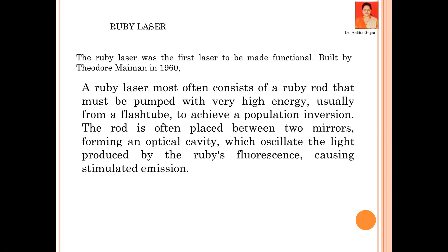Ruby laser को Theodore Maiman ने 1960 में सबसे पहले invent किया था। इसमें उन्होंने एक ruby rod ली थी, जिसके ऊपर एक flash tube या flash lamp use किया। Flash lamp is a particular source of light which you can use for optical pumping.